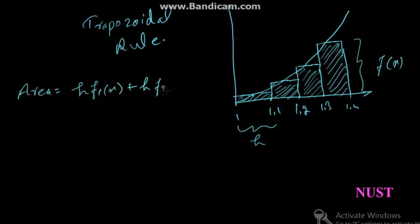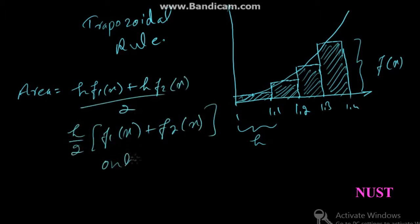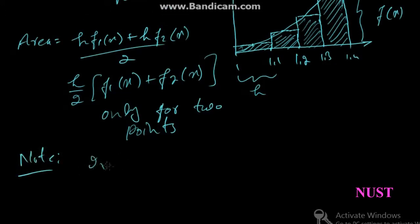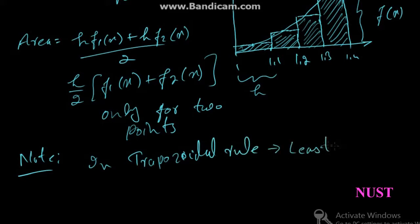The expression can be written as shown, with n being the number of points. Remember that in trapezoidal rule, we must have least number of points two.